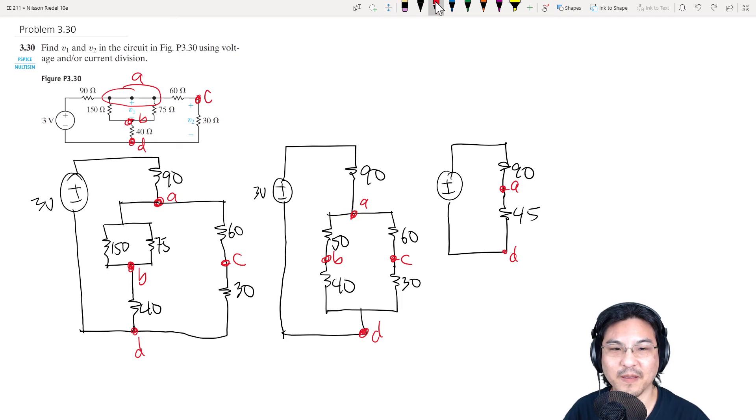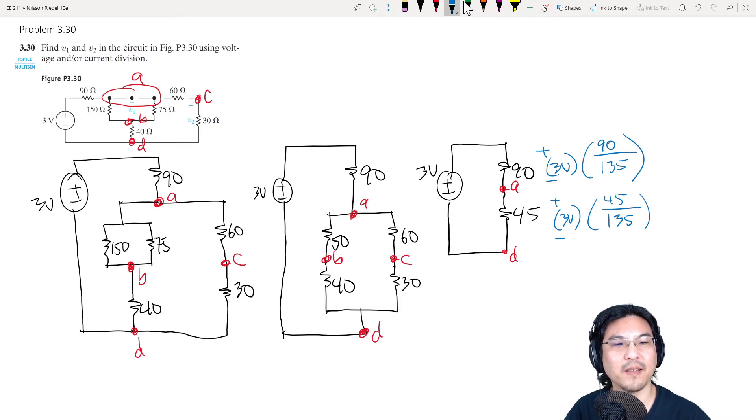Now, if you look at this circuit, you could tell me the voltage here, right? It's 3 volts times 90 over the sum, 90 plus 45, which is 135. Right? And then the voltage from here to here is 3 volts times 45 over 135. Okay, so this is 1 volt, this is 2 volts.